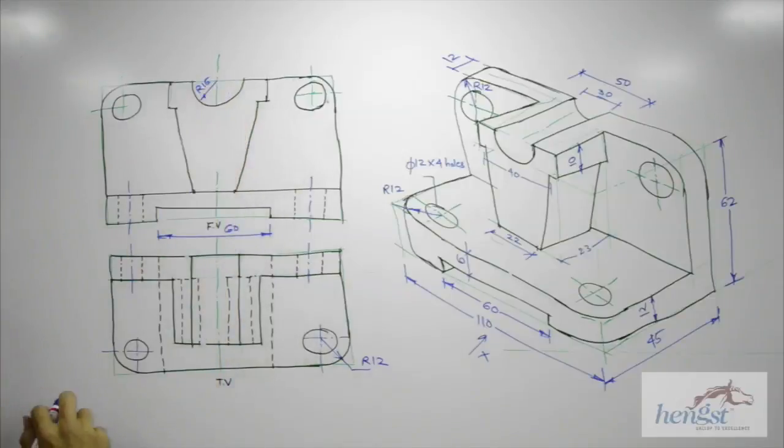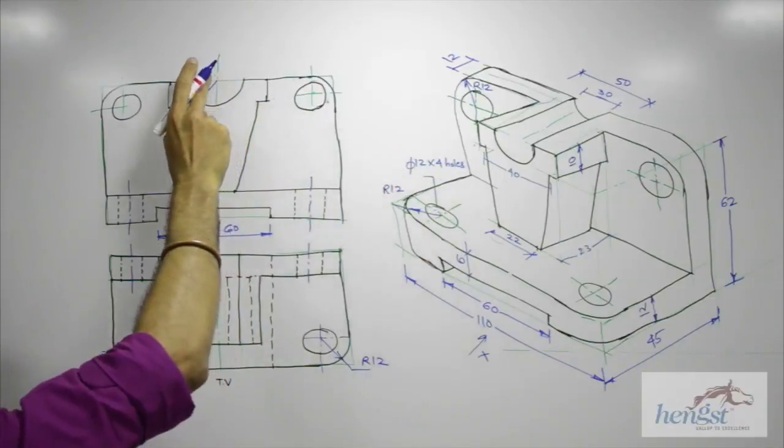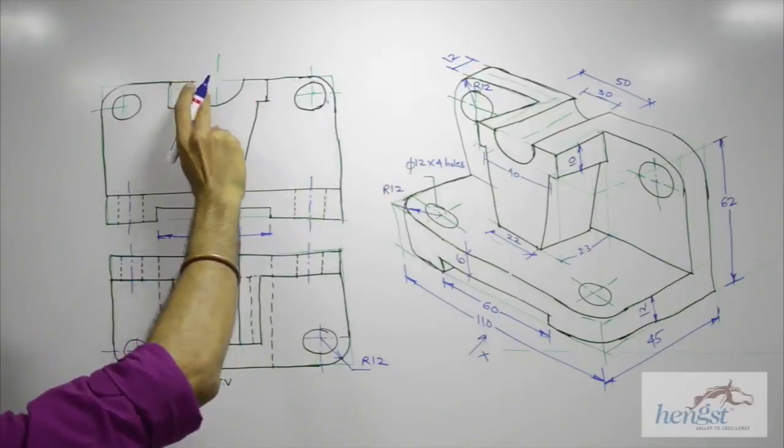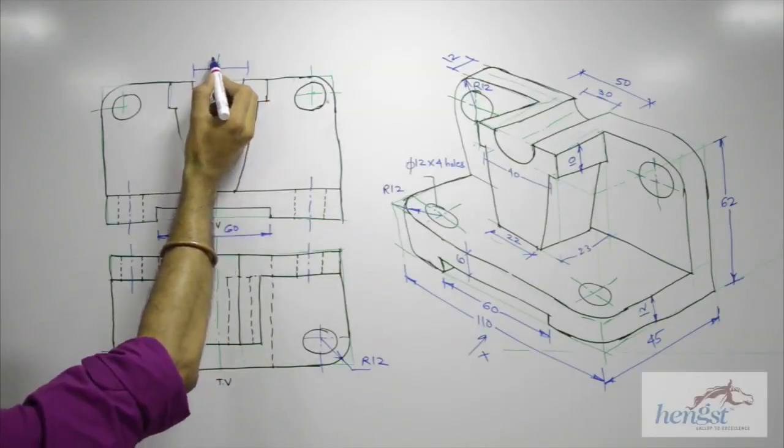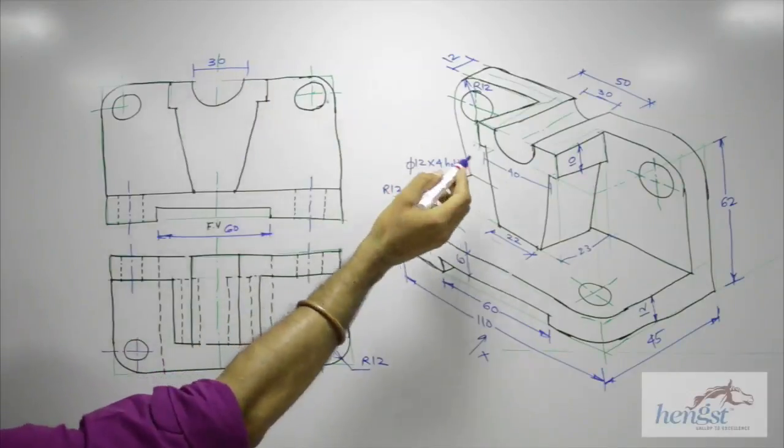Now one more thing. If I am writing 15 over here but it is not shown, instead of writing 15, you write whatever is given to you. So you don't put calculated dimensions. You put whatever is given to you. So they have given you 30, so you write 30. They have given you 50, you write 50.